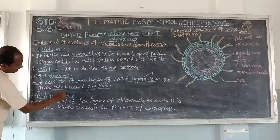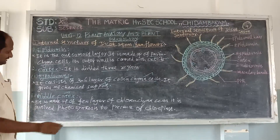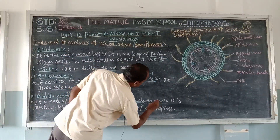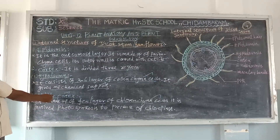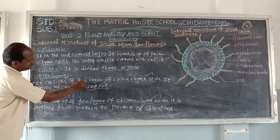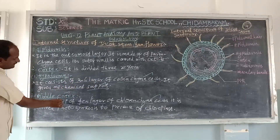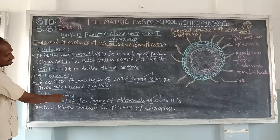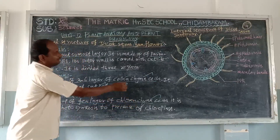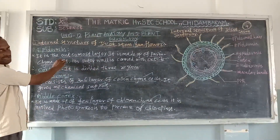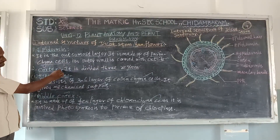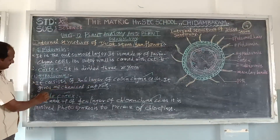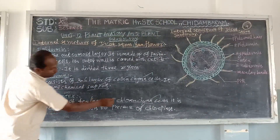The next cortex region is the middle cortex. This is the middle part of the cortex layers. The middle cortex is made up of chlorenchyma cells. It has only a few layers — one or two layers — compared to the hypodermis which has three to six layers. So: epidermis is made up of parenchyma cells, hypodermis is made up of collenchyma, and the middle cortex is made up of chlorenchyma.